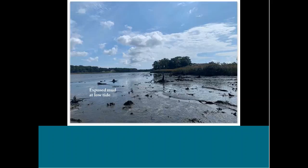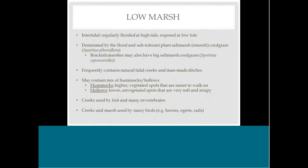A mudflat photo shows the wet, recently flooded surface with the tide low and no green living vegetation — it's just too wet and low in elevation. Moving slightly upward in elevation is the low marsh, which is still intertidal — regularly flooded at high tide but exposed enough to support plant life. The main plant in a low marsh is salt marsh cordgrass, Spartina alterniflora. In brackish marshes with lower salinity, you might also see big salt marsh cordgrass, Spartina cynosuroides.